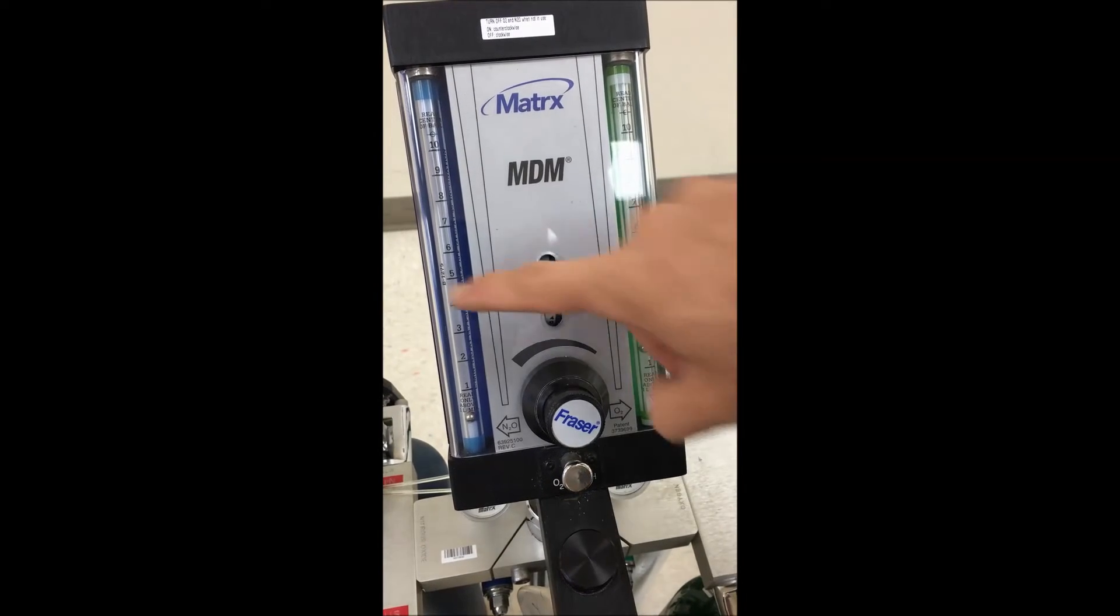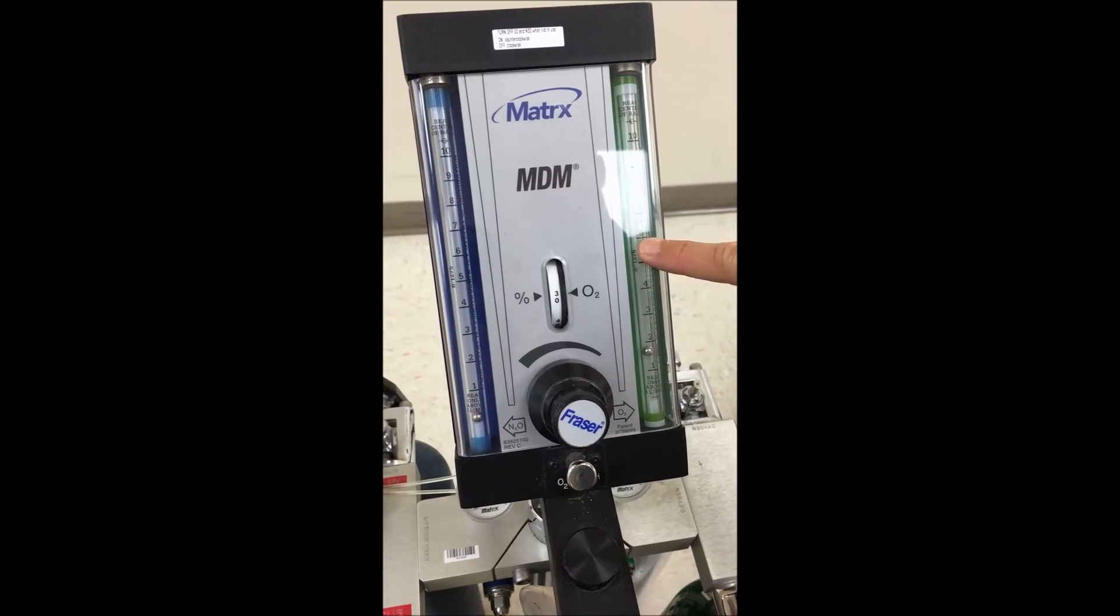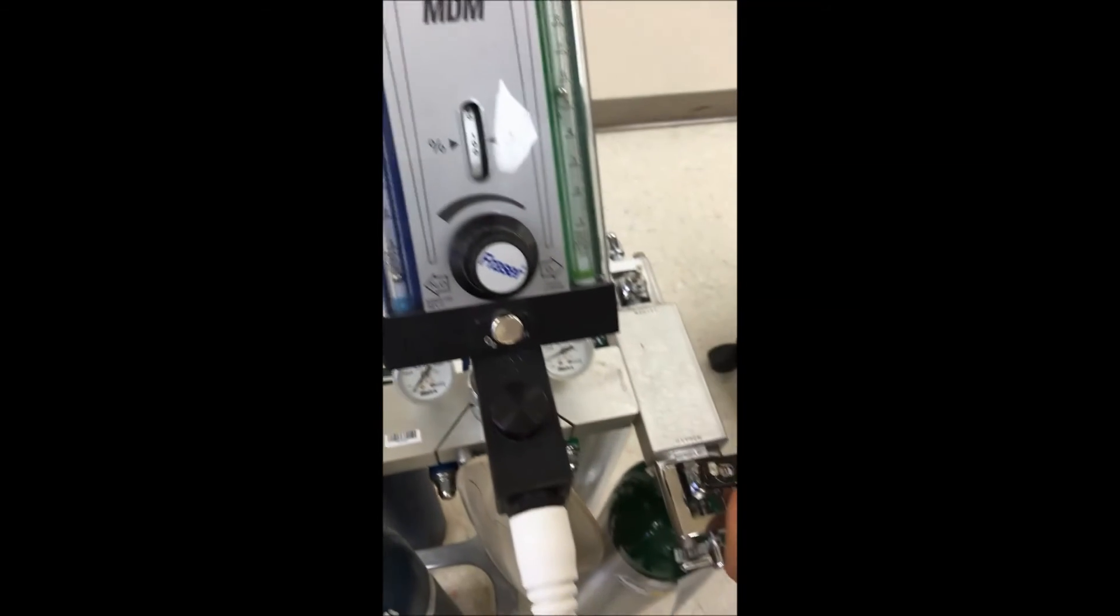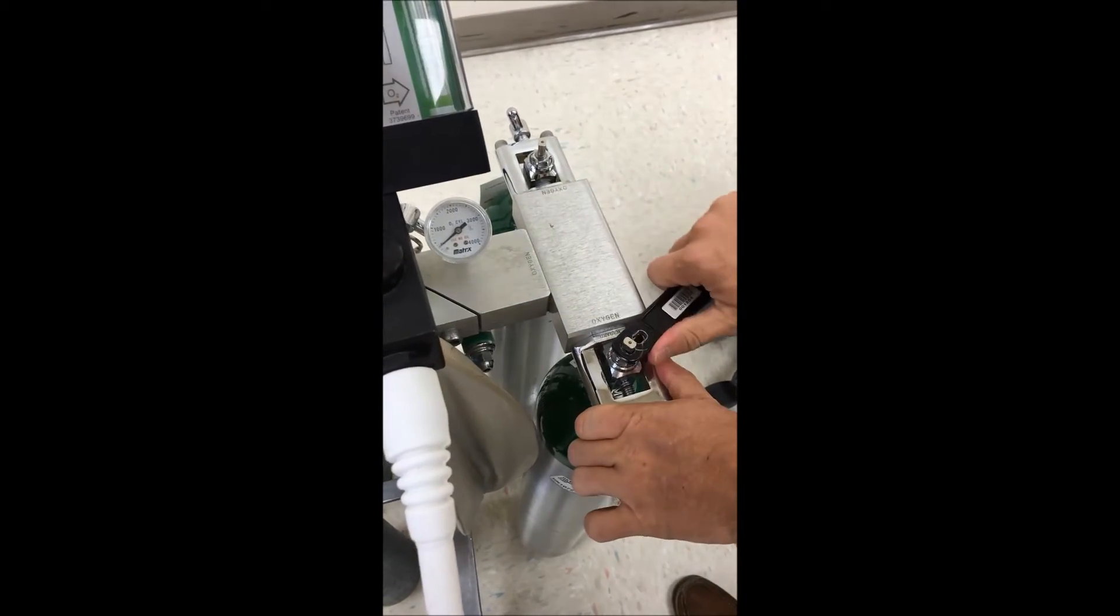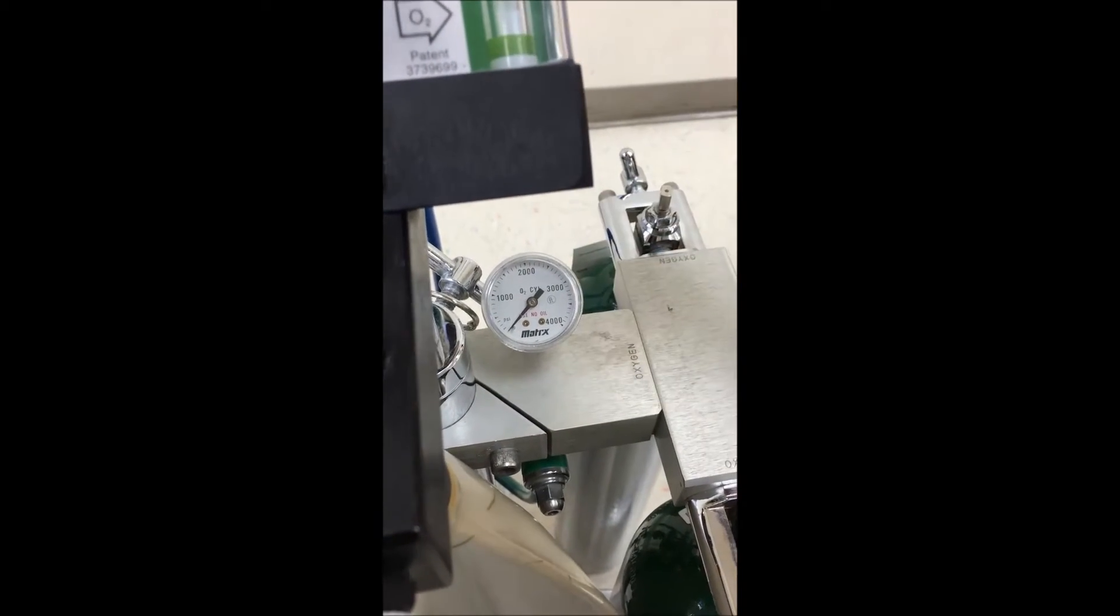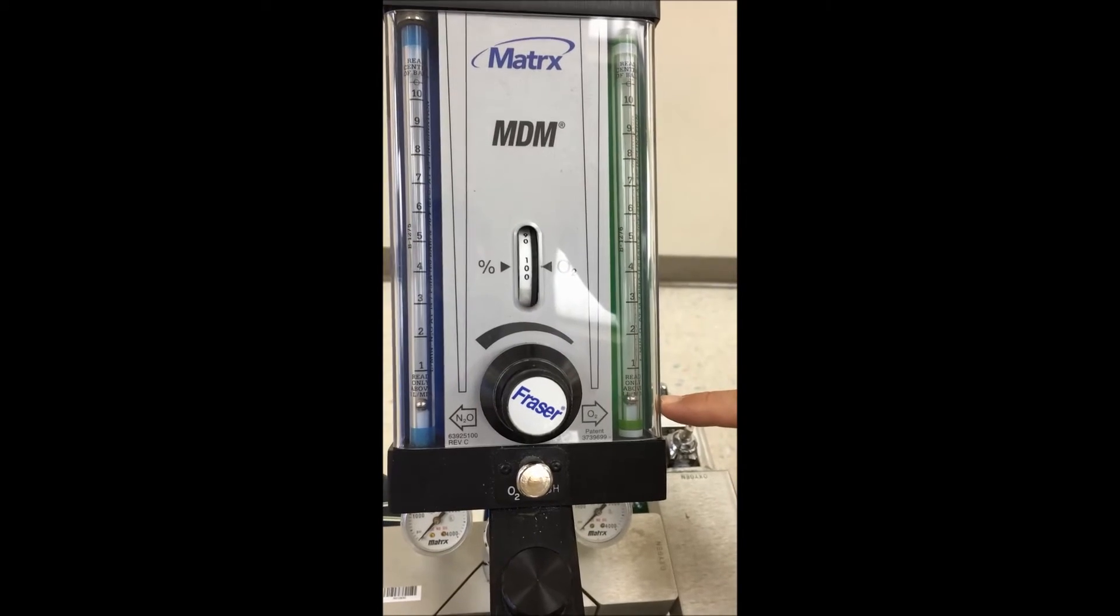So now that we've done the nitrous side, we're going to purge the oxygen. You can jack it up to 100%, turn off the tank, and it will go down to zero. When it's totally done, it goes down to zero.